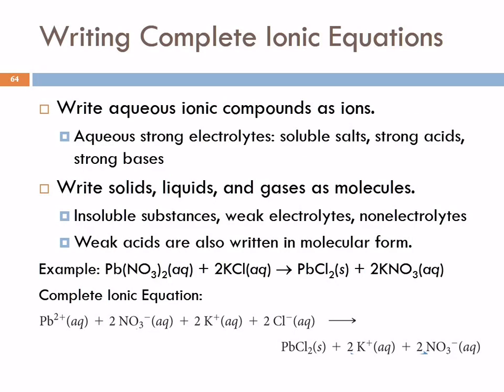So let's look at how we do this. To write the complete ionic equation, you're going to express all the aqueous ionic compounds as ions. So these include the aqueous strong electrolytes. Those are soluble salts and strong acids and strong bases. If you have a solid, a liquid, or a gas, you can tell those from the state symbols. You just copy those down as they are. Those are insoluble substances, weak electrolytes, non-electrolytes. That includes the weak acids because they do form some ions, but mostly they're in molecular form.